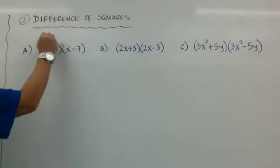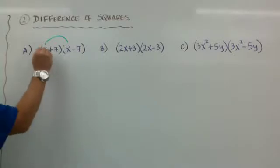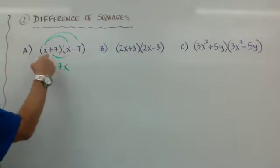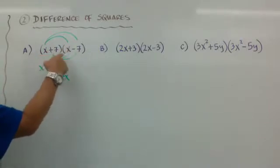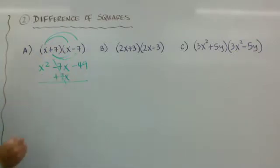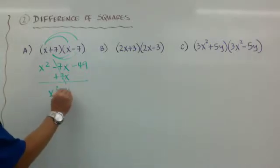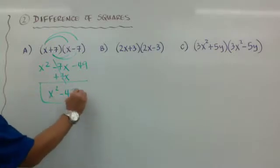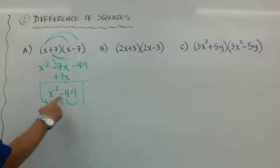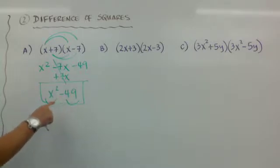When you do FOIL on (x+7)(x-7), you get x squared for F. For O, you get x times negative 7, which is minus 7x. For I, you get plus 7 times x, which is plus 7x. And for L, you get 7 times negative 7, which is minus 49. Notice that the O and the I cancel each other out, and you're left with x squared minus 49. This is called a difference of squares because x squared is a perfect square and 49 is a perfect square, and difference means subtraction — a perfect square minus a perfect square.